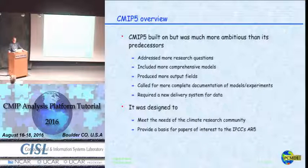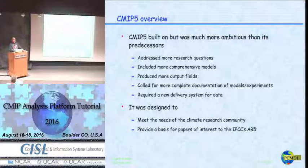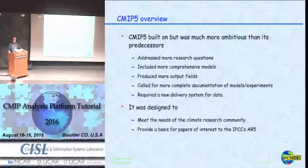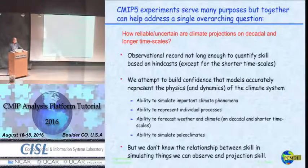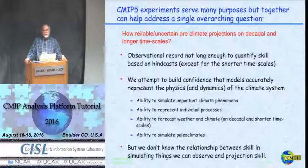The CMIP5 suite of experiments was designed to meet the needs of the climate research community in general, and also provided a basis for IPCC papers. It's important to note that CMIP5 was not founded to serve the IPCC — it was founded to meet the modeling centers' needs and their desire to understand climate better. The project has been phased to meet some IPCC deadlines, but the overarching theme is addressing the question: how reliable are climate projections on decadal and longer time scales?